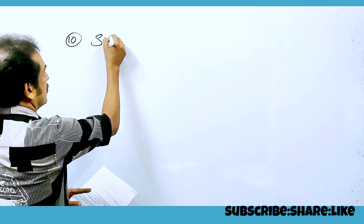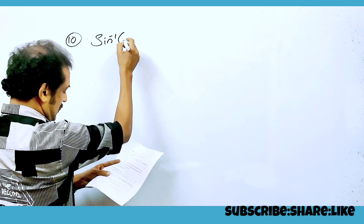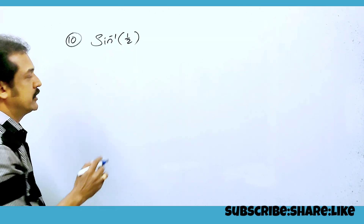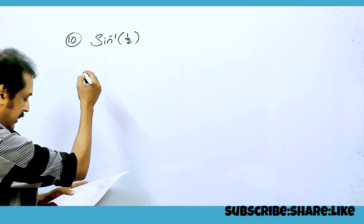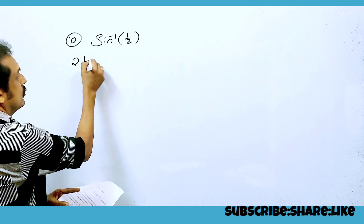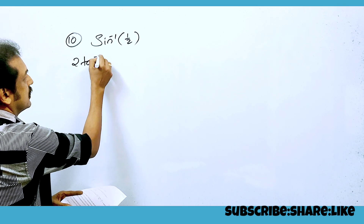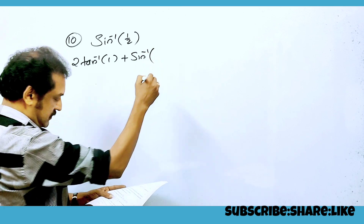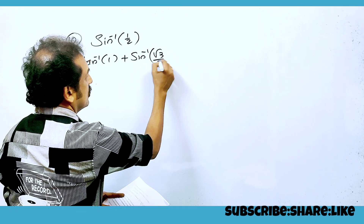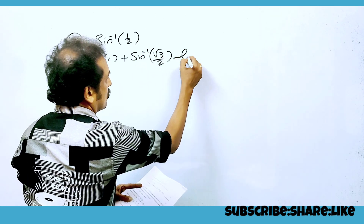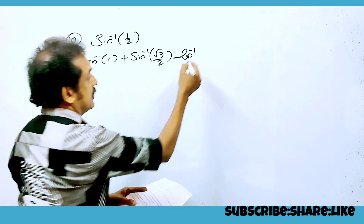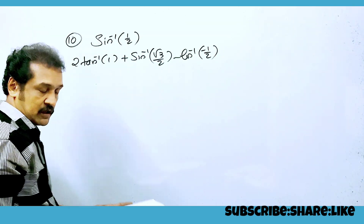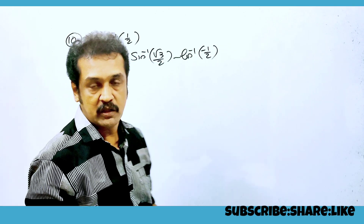We are going to talk about sine inverse of 1/2. Let's talk about the principal value. Find the value of 2tan⁻¹(1) + sin⁻¹(√3/2) - cos⁻¹(-1/2).